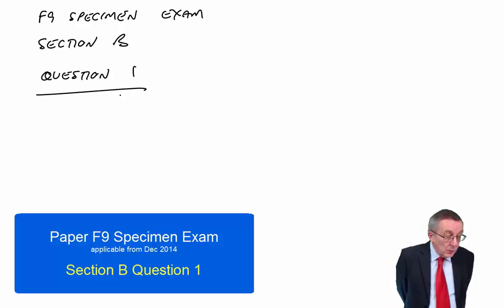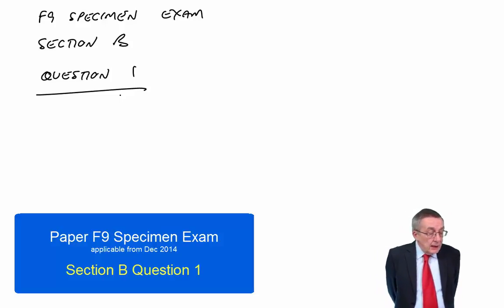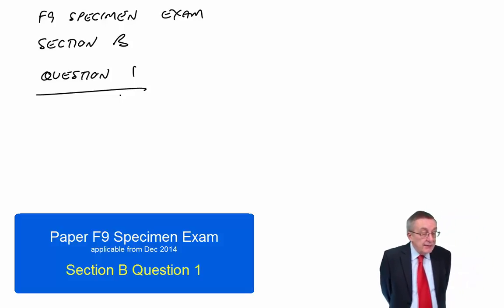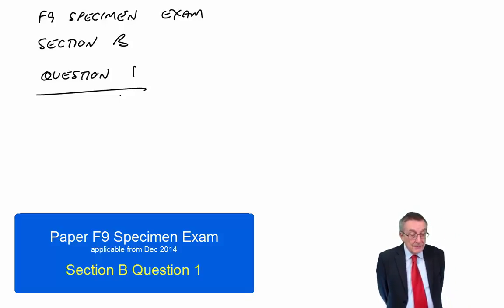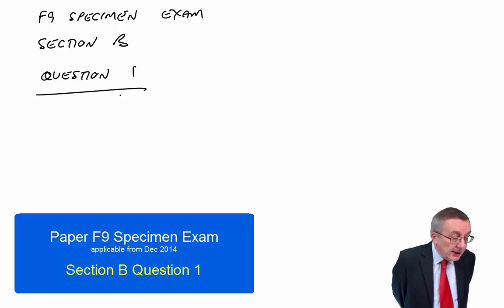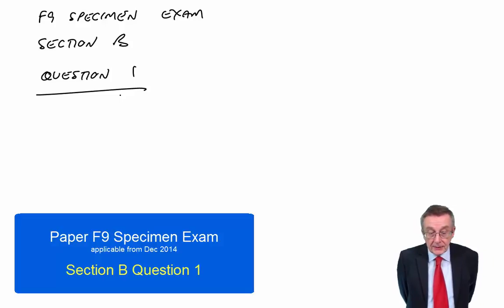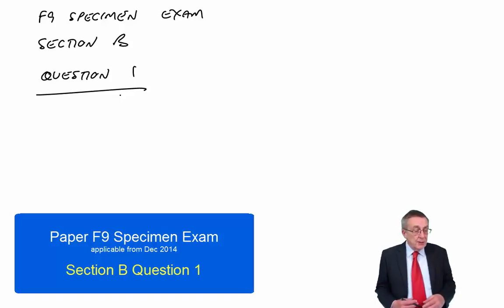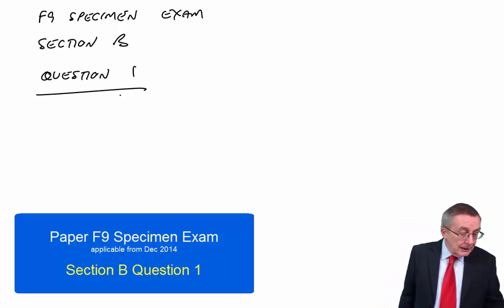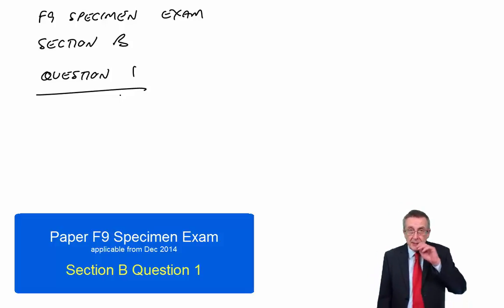Always read the question first, always. And then you don't waste time. Part A: Discuss briefly the factors which influence the formation of working capital policy. Part B: Calculate if Catco will benefit financially by accepting the offer of the bulk purchase discount. Part A, discuss, that's purely writing. It's six marks out of ten. And remember, you're aiming for at least 50% in every question.